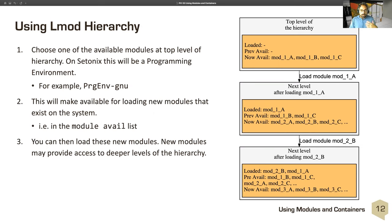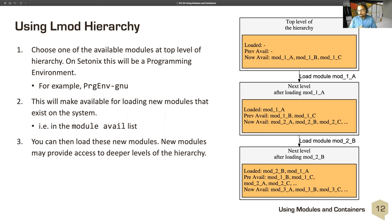Using the hierarchy is a bit tricky — modules may be present in one hierarchy but not another. Choosing a top-level module like a programming environment will unfold that set of modules. You can look at modules with module avail, then load them. New modules may provide access to deeper hierarchy levels. At the top level with nothing loaded, you might load module 1A, 1B, or 1C. Loading 1A makes new modules like 2A, 2B, 2C available. Loading 2B then provides access to 3A, 3B, and 3C.